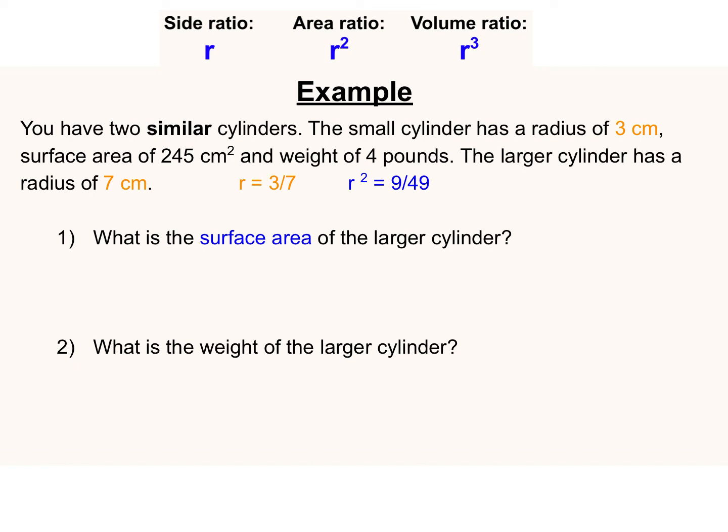I'm now ready to set up a proportion with that new area ratio, given the surface area of the smaller cylinder that I already know. So the smaller cylinder's surface area was 245. Because I wrote my ratio as 9 over 49, small over big, the 245 has to go on top. And when we solve that proportion by cross-multiplying and dividing, we get an area of 1,333.89 square centimeters.